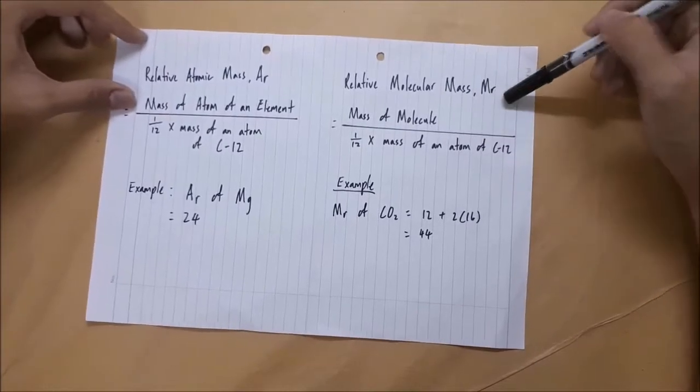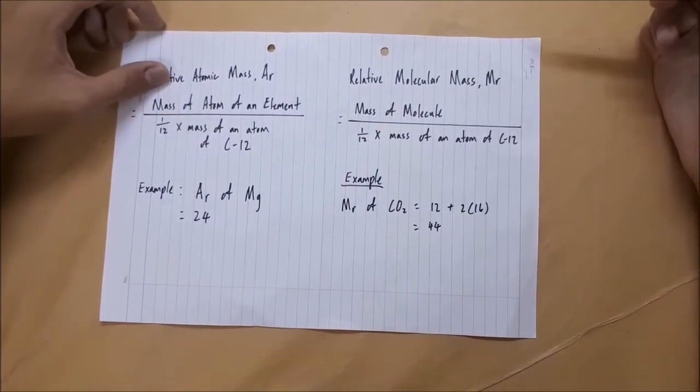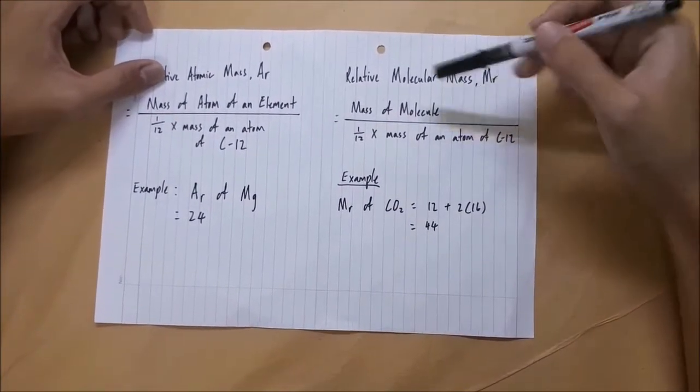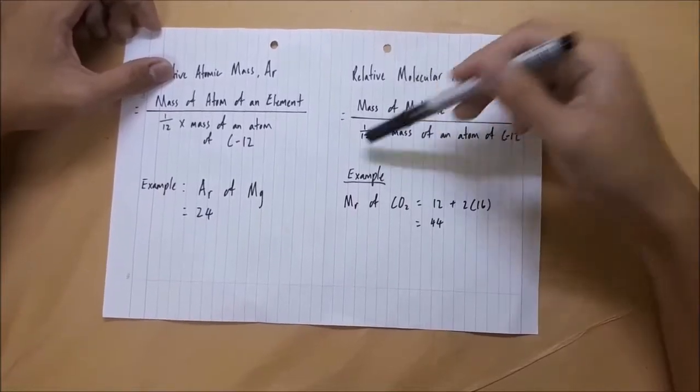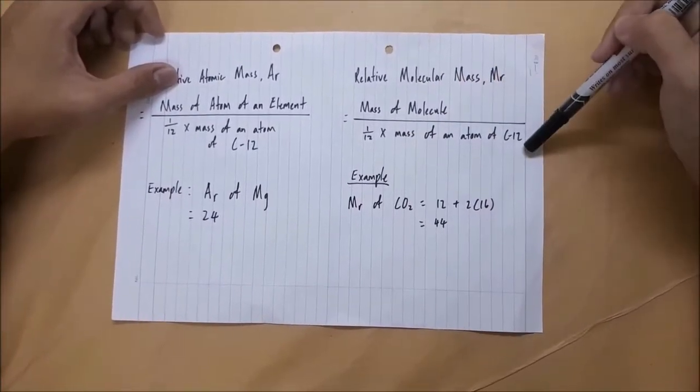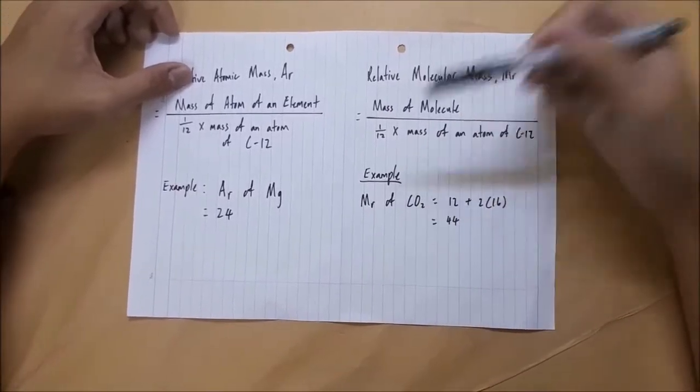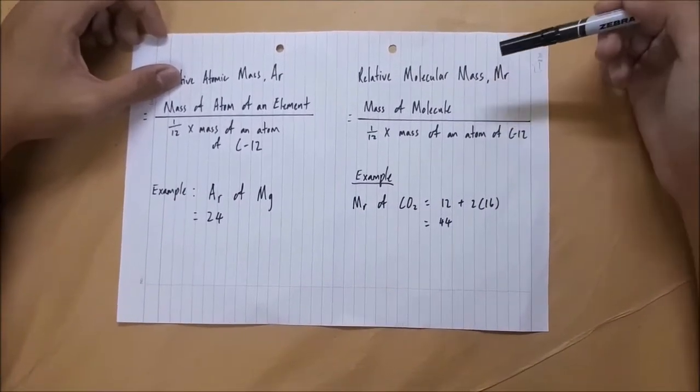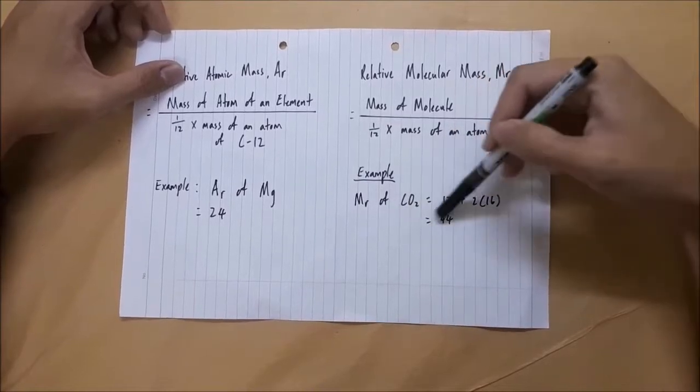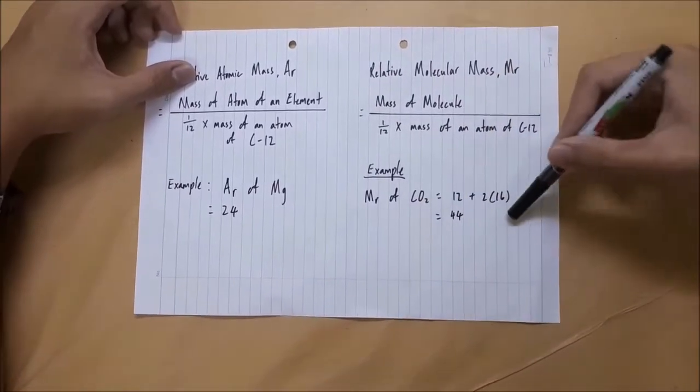On the other hand, we have the Relative Molecular Mass. Relative Molecular Mass is defined as the ratio of the mass of the molecule to one-twelfth of the mass of an atom of carbon-12. For example, say we want to find the Relative Molecular Mass of carbon dioxide, we can just sum out the Relative Atomic Mass of the atoms inside CO2 as shown in the working here.